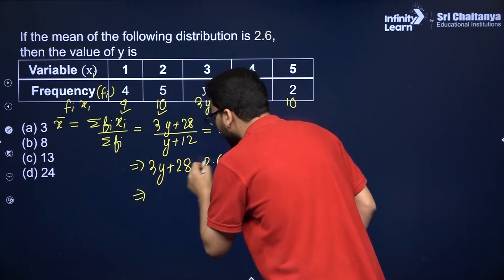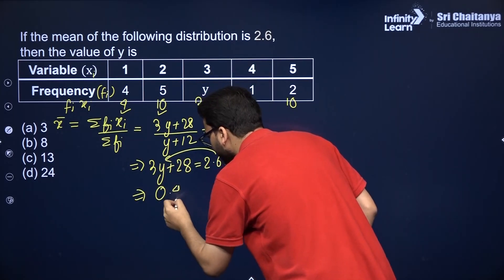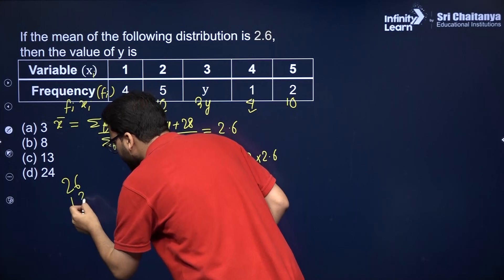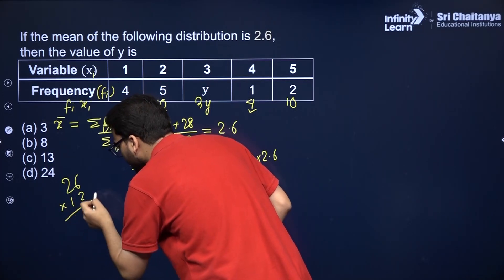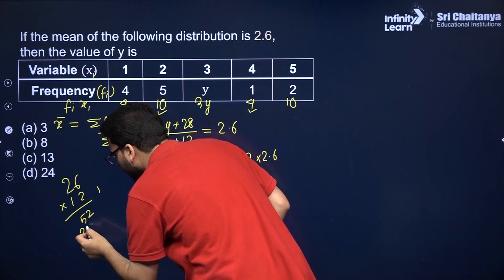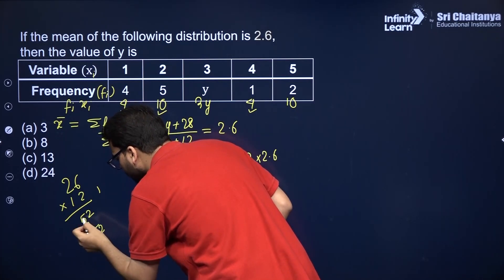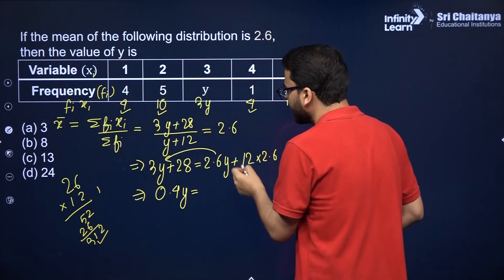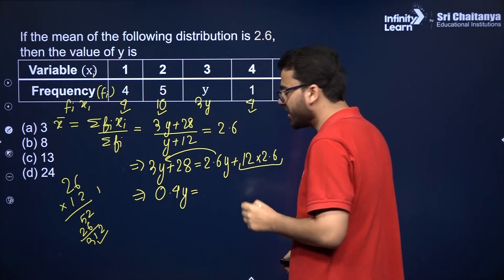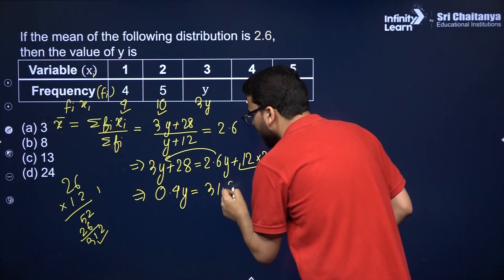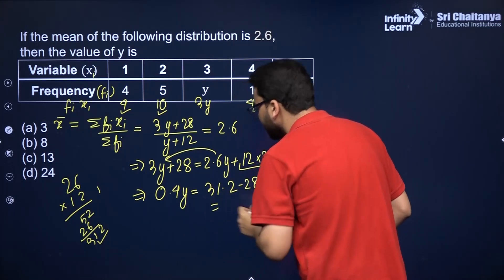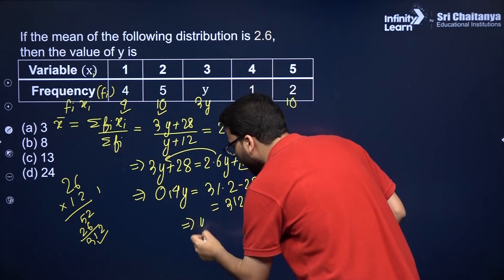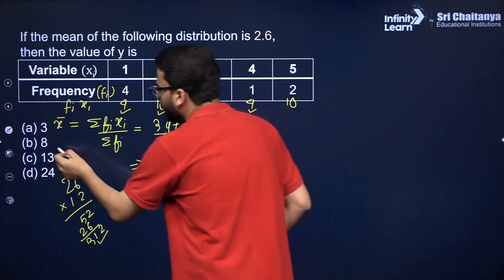Cross-multiplying: 3y + 28 = 2.6(y + 12), which gives 3y + 28 = 2.6y + 31.2. Bringing terms together: 0.4y = 31.2 − 28 = 3.2. Cancelling the decimal, y = 32/4 = 8. So the value of y is 8.